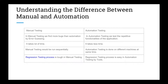In manual testing we find more bugs than in automation, because we are doing random testing and behaving more like a real user. In automation, we just test repetitive tasks. Generally, at the start of a project around 60 percent of the effort is manual, and then 40 percent — the regression part — can be done through automation.